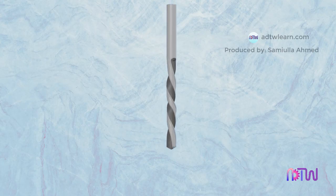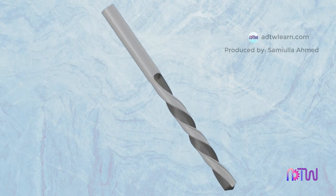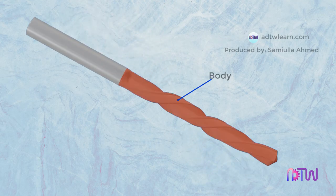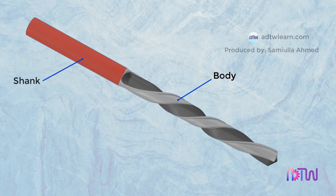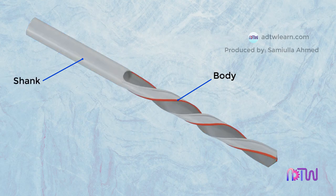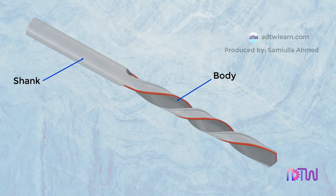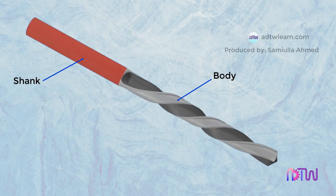The twist drill consists of two parts: a body and a shank. The body consists of the cutting edges that do the work of material removal, and the shank is used for gripping the drill inside the chuck.